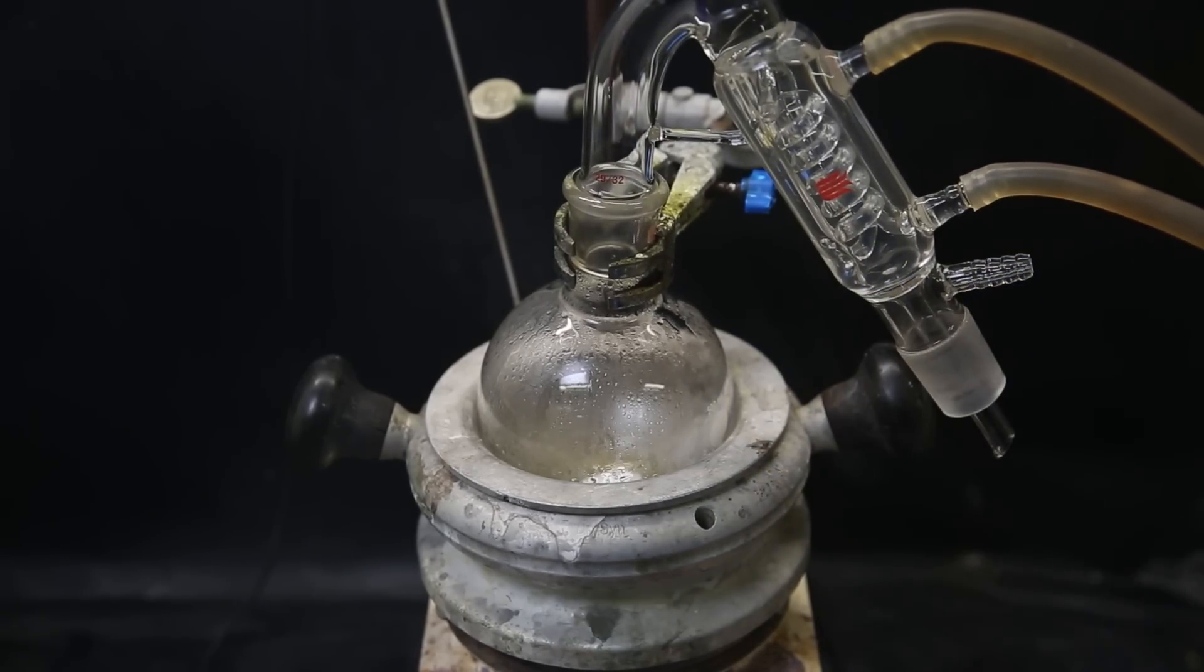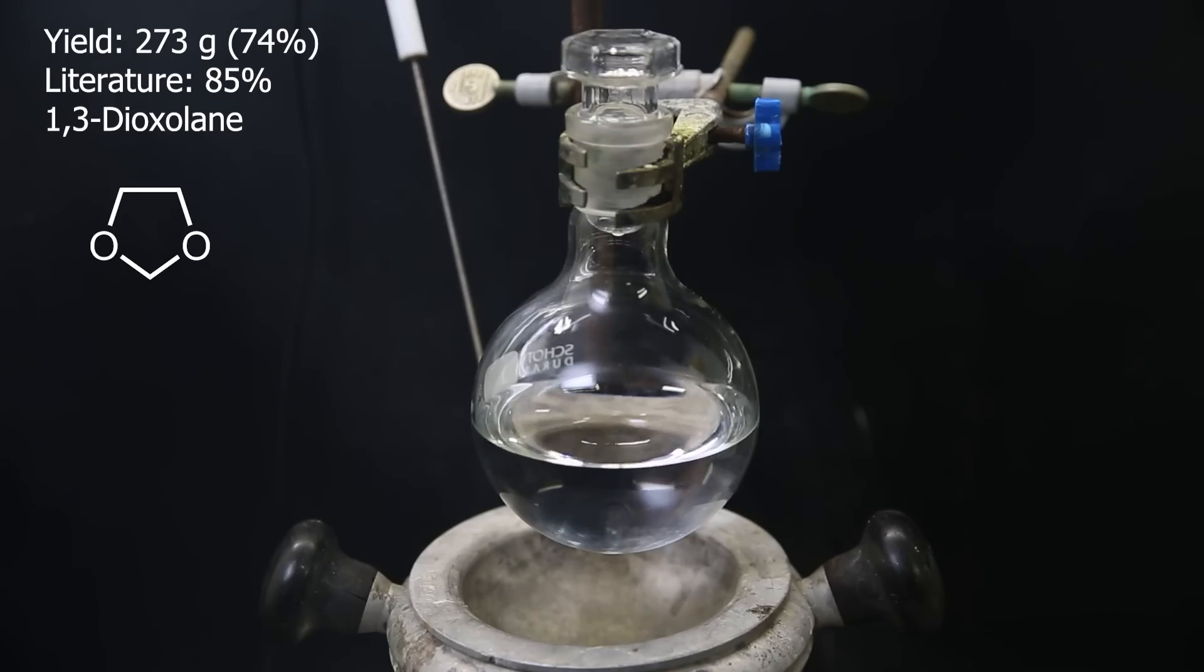I take the flask containing the 1,3-dioxalane, and the yield turned out to be 273 grams, which is 74%. This is a pretty decent yield, and the reaction is not dirty at all compared to something like a dioxane or diethyl ether synthesis. The literature had a yield of 85%, but I didn't run the reaction until the temperature they mentioned, and I didn't supply sulfur dioxide constantly. Also, I probably lost some with the splashing.